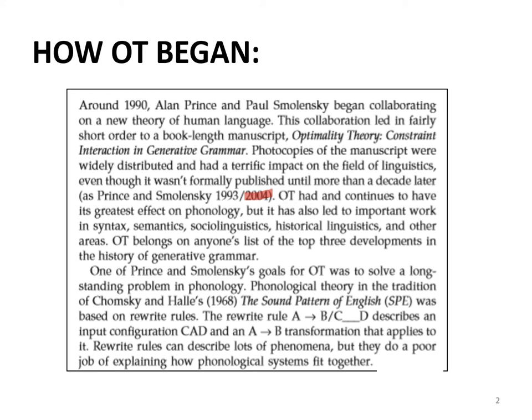The manuscript remained as a manuscript until 2004 — only in 2004 did the Rutgers University Optimality Archive come forward and publish it as a book. When referencing this work, there are two variations: the 1993 manuscript and the 2004 published book, which is 11 years later. You need to take into consideration whether you are referring to the manuscript or the book.